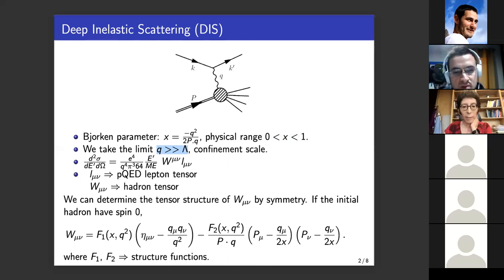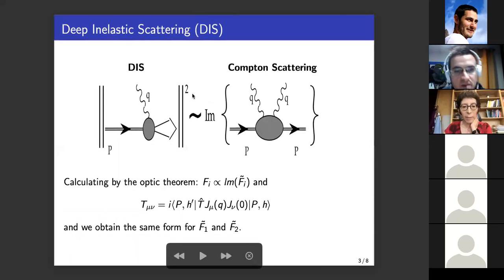Which is proportional to the contraction of two tensors: W^μν and L^μν, where W^μν is the hadron tensor and L^μν is the lepton tensor. The lepton tensor is described by perturbative quantum electrodynamics. And we can determine the tensor structure of W^μν by symmetry, for example with parity symmetry. And in the case of a hadron, if the hadron has spin zero, we have W^μν given by this, where F_1 and F_2 are the structure functions.